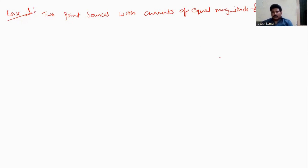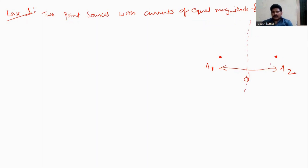Drawing the diagram: let us consider this is a2 and this is current element a1 — two point sources. These two point sources are separated by a distance d. Let us consider this is the origin. a1 is taken at the negative side and a2 at the positive side. Let us take point p as the point of observation.